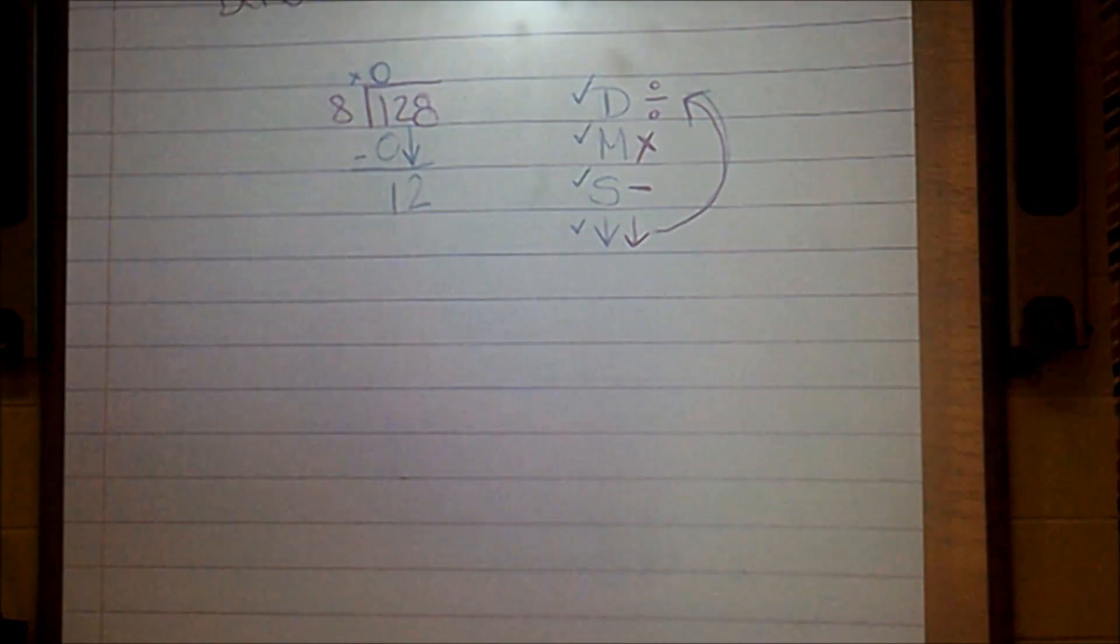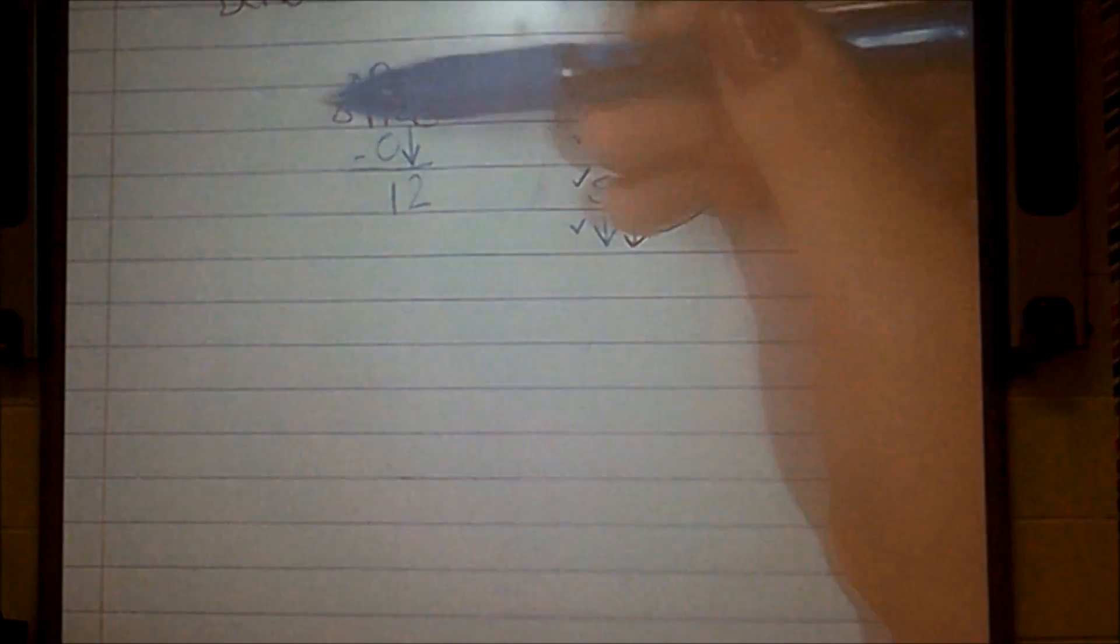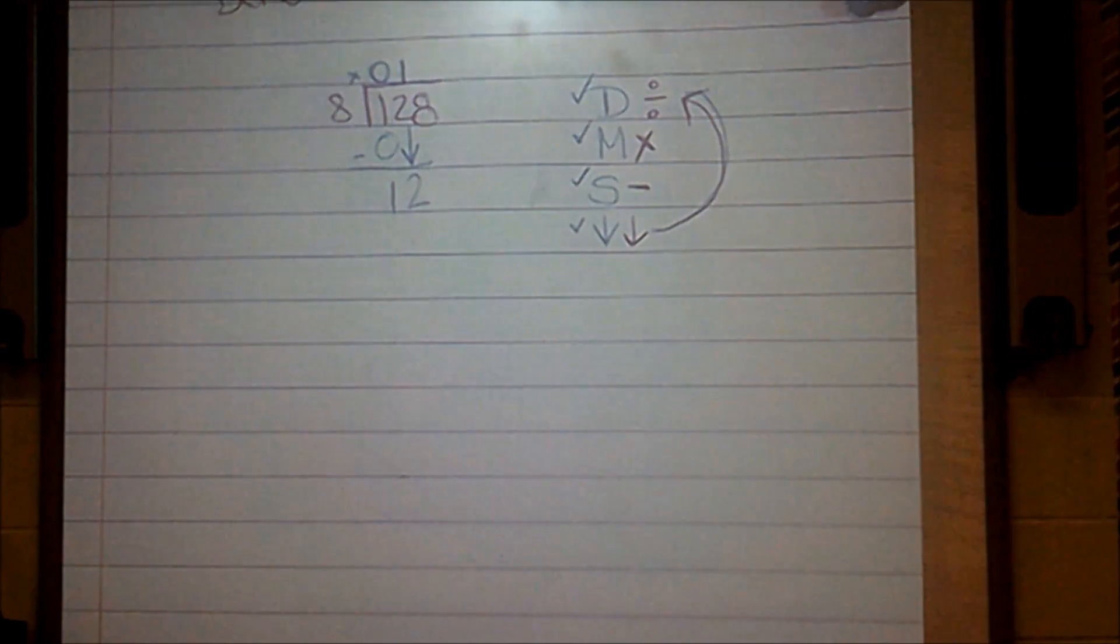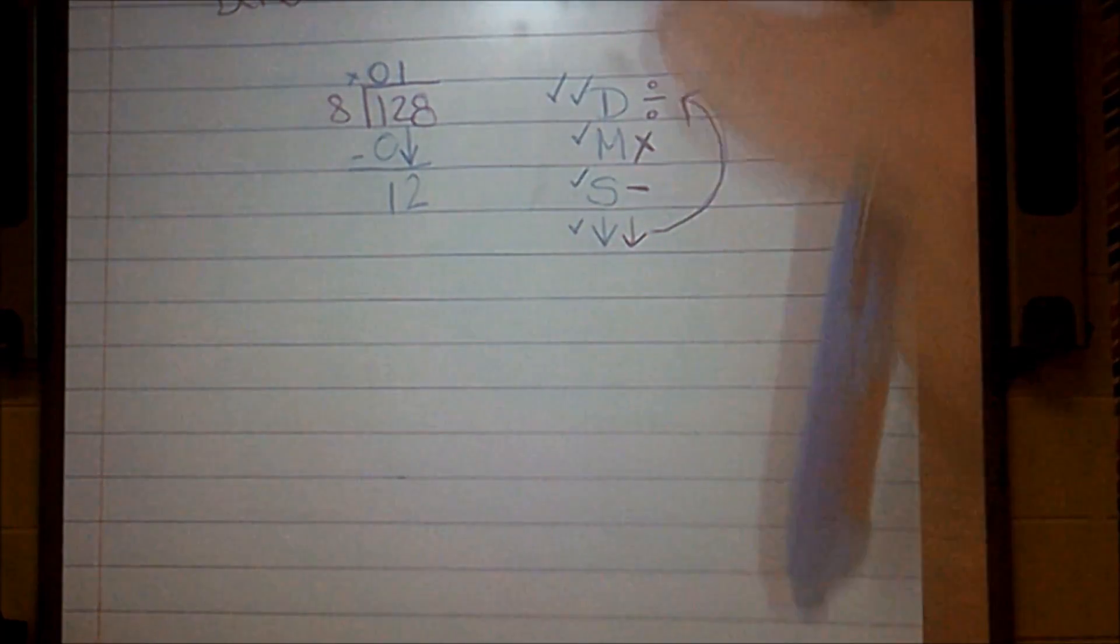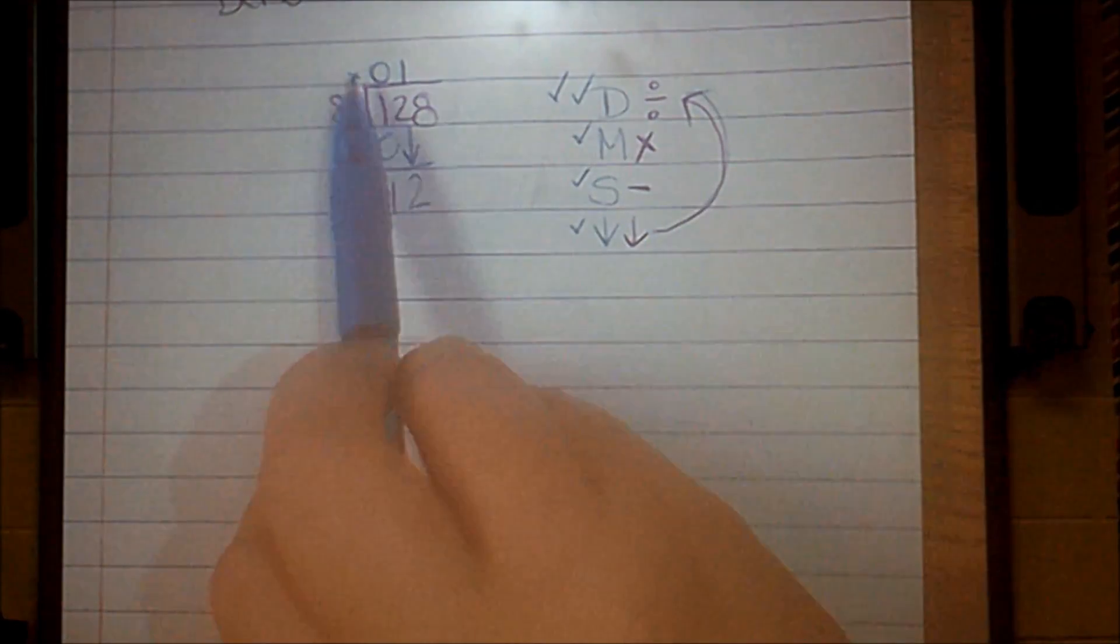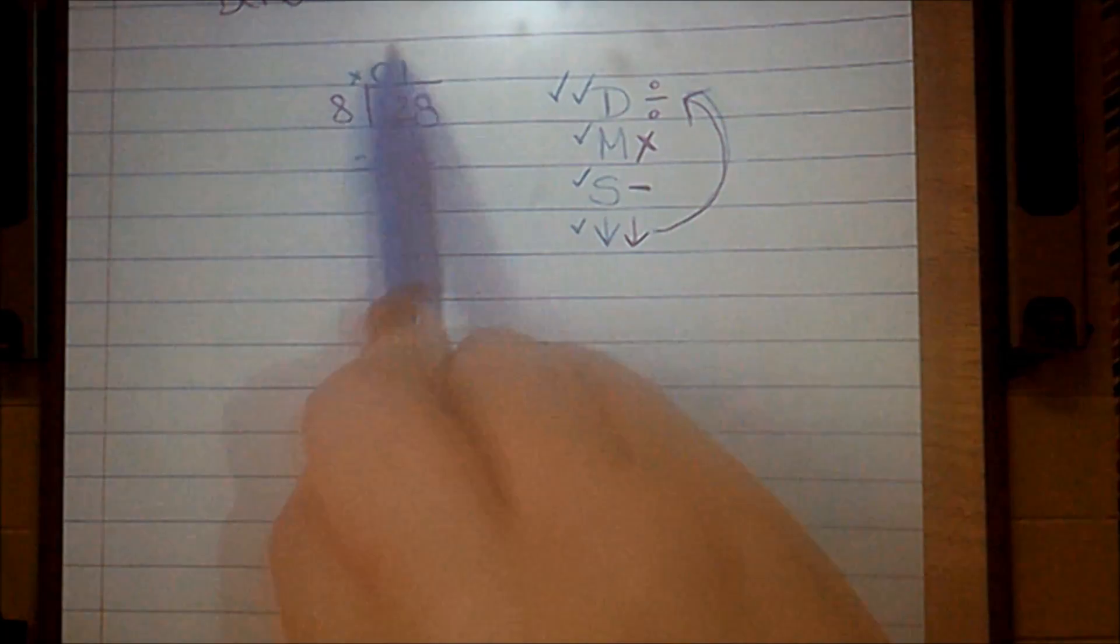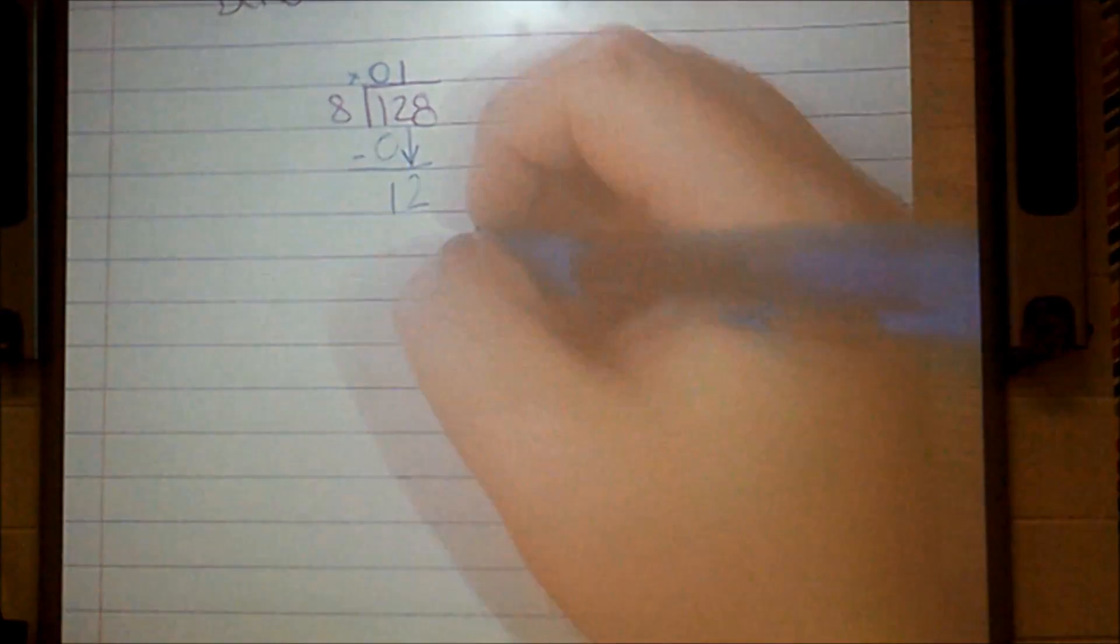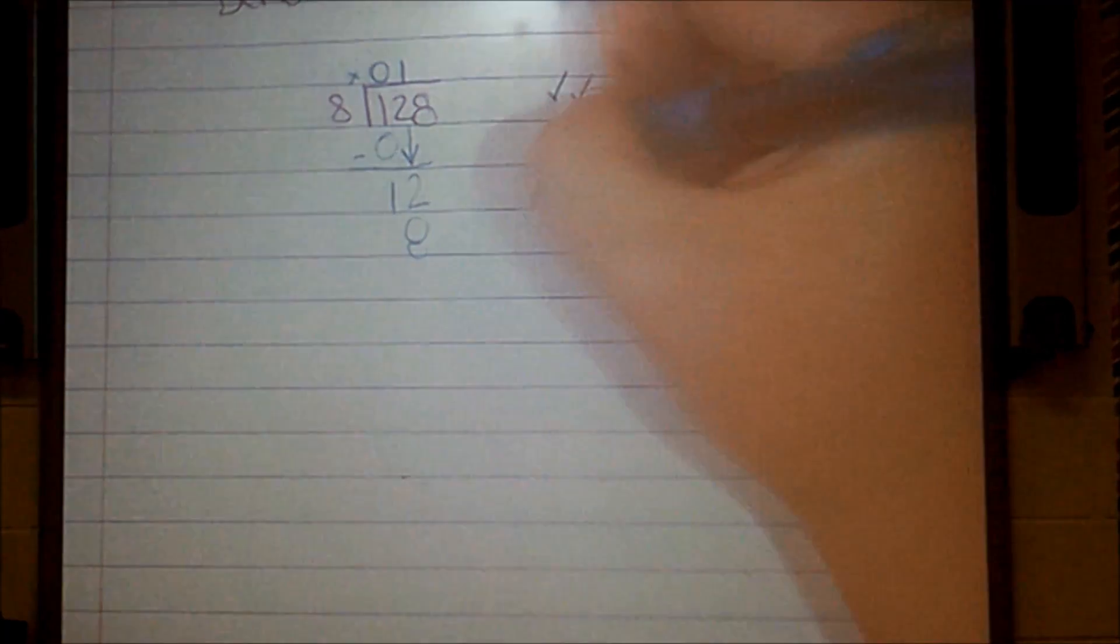So I count by 8 until I hit or pass 12. 8, 16. Oh, I already passed it. Can't go past it. So I only have 1. So 8 can only go into 12 one time. I put it on top of that 2 above my cave, without going over. Check it off my list. Go down to the next one. Multiply. So I'm going to do 8 times whatever digit I just put on top of my cave. So 8 times 1. Well, 8 times 1 is 8.